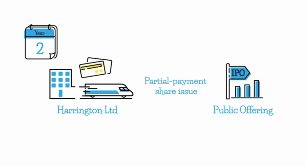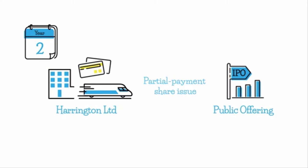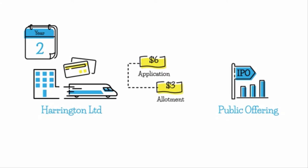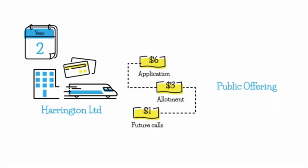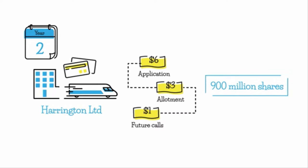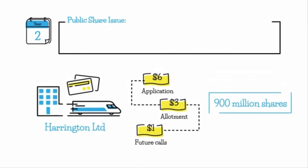The board resolved to do a partial payment share issue. $6 is due on application, $3 on allotment, and $1 is due as future calls. They received applications for 900 million shares, all allotment money was received, and all shares are allocated. We're asked to record the journal entries for the share issue.